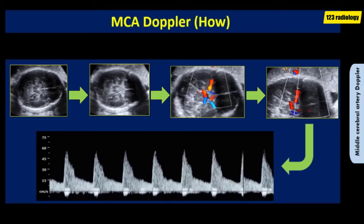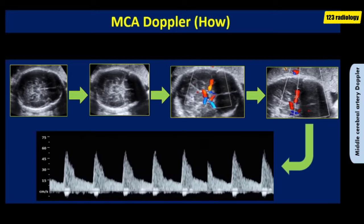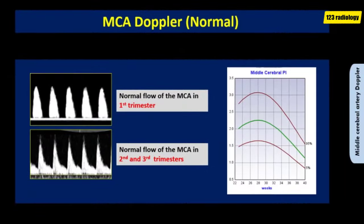Fetal head compression should generally be avoided, as it can artificially lead to decreased diastolic flow in the MCA. Normally, the middle cerebral artery has high peak systolic velocity and low end-diastolic volume. In the first trimester, diastolic flow is absent in the MCA; with advancing gestation, diastolic flow is established with low end-diastolic volume. The normal pulsatility index of the middle cerebral artery should be above the 5th percentile for gestational age.